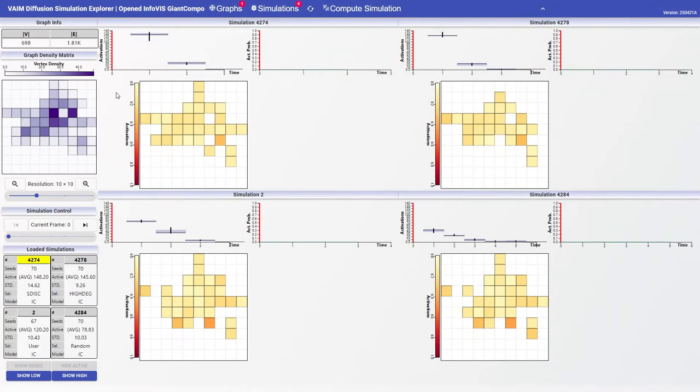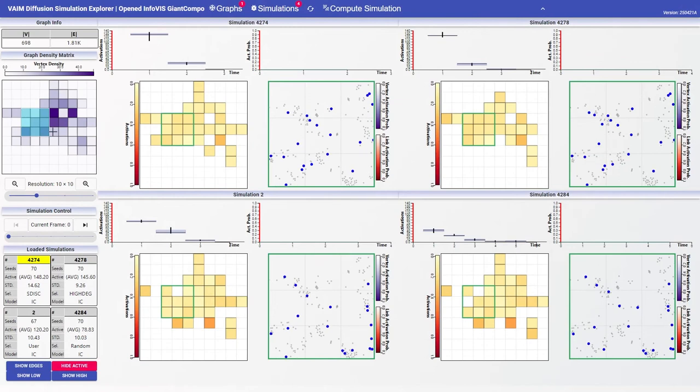We will now provide a demonstration of how all the views are coordinated. At step 0, as shown here, it is possible to compare the seed distribution between the loaded simulations. To enable the node link views it is necessary to brush the area of interest on the density matrix.